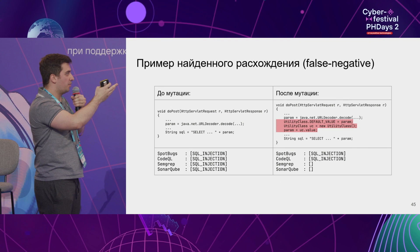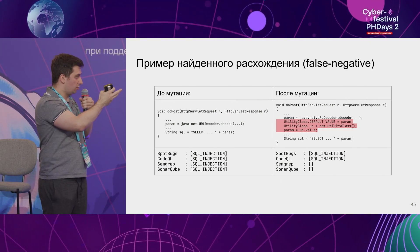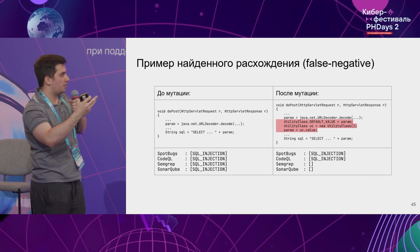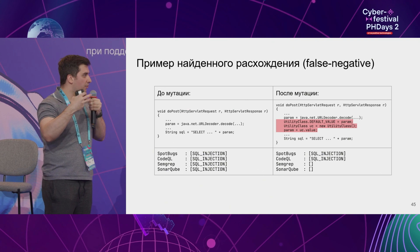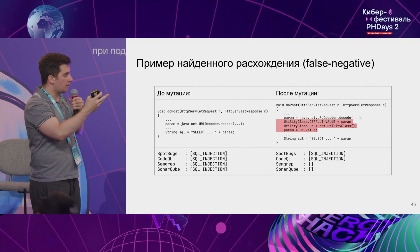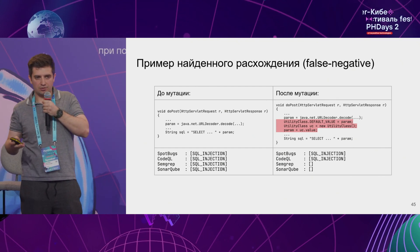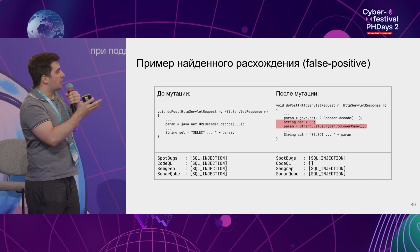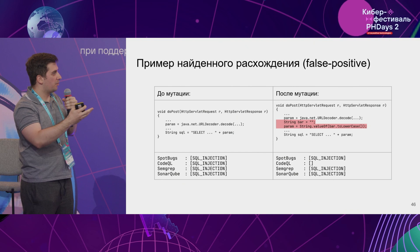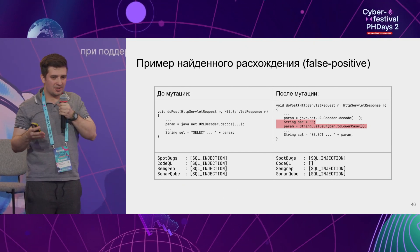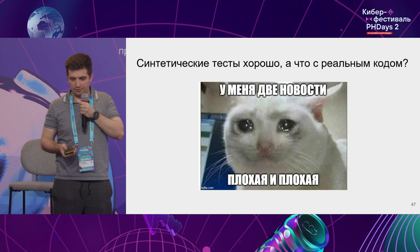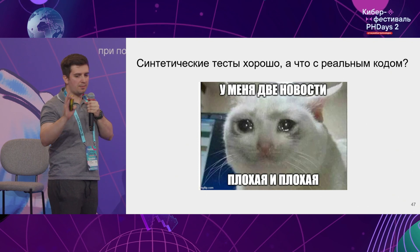Divergences identified: this is the same SQL injection case which works perfectly for all existing tools. We insert a template using a static class field — we assign param, and get it again, assigning it its own value. With this code, 50% of tools were not able to cope with it. For the false positive example: we have the same test, give param an empty line, and apply two simple functions from the standard library. Today, only one of four tools filters such a false positive.